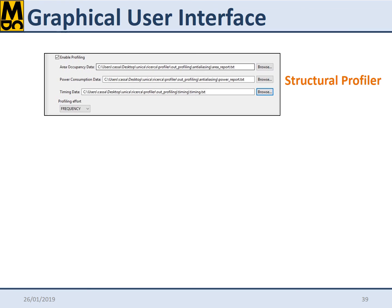For the structural profiler, the user has to specify the adopted characterization files, providing area, static power, and timing data to be used during the design space exploration. Moreover, he or she shall also specify which is the primary constraint to be considered among area, power, and frequency during the exploration, since a global optimum often cannot be found.